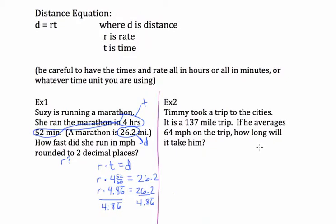Next problem. Timmy took a trip to the cities. It is a 137 mile trip, so that's his distance. If he averages 64 miles per hour on the trip, that's his rate. How long will it take him? How long? That's asking me what's the time. So I'm going to be looking for the time. Now write your equation.